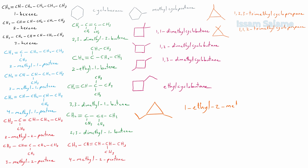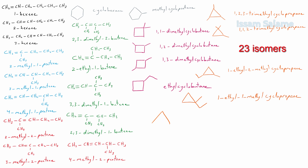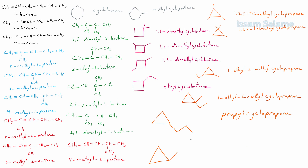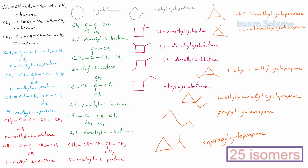If the ethyl and methyl are joined to the same carbon, the name is 1-ethyl-1-methylcyclopropane. With a propyl substituent joined to cyclopropane, the name is propylcyclopropane. And the last isomer: with an isopropyl group joined to cyclopropane, the name is isopropylcyclopropane.